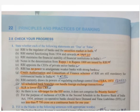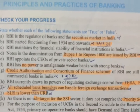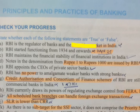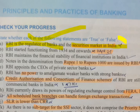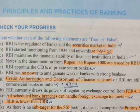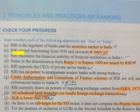We have almost completed the second unit. Now let's check your progress with true or false. First: 'RBI is the regulator of banks and securities market in India' — False. RBI is the regulator of banks but not the securities market; SEBI is the regulator of the securities market. Second: 'RBI started functioning from 1934' — False. In 1934 the RBI Act was enacted, but RBI started functioning on 1st April 1935.